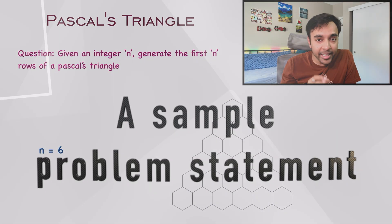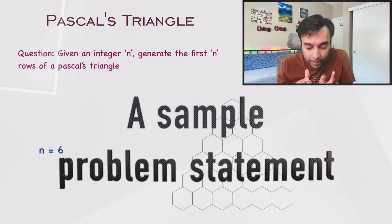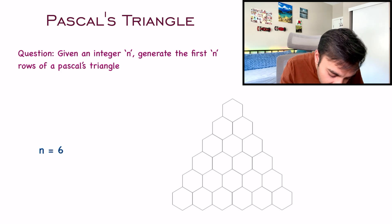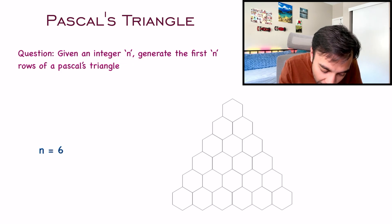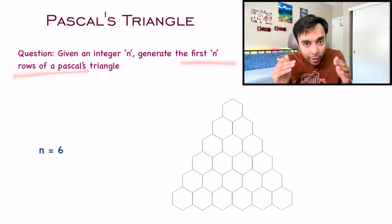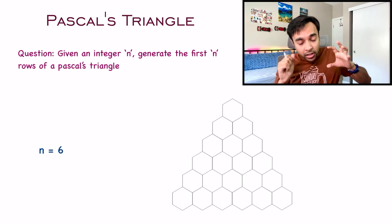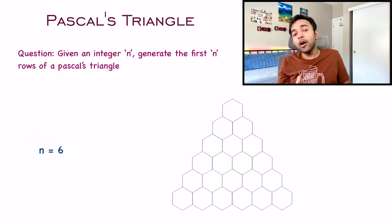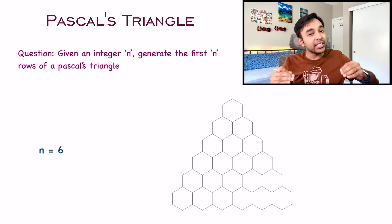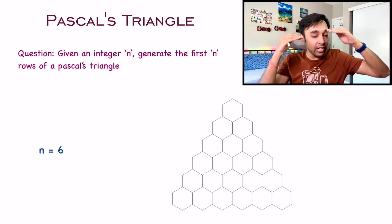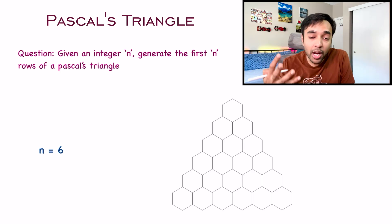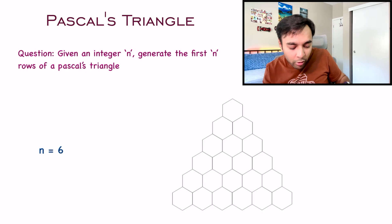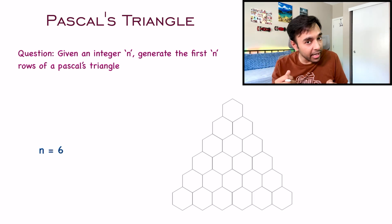First of all, let's try to take a look at a generic problem that you will find on a Pascal's triangle. You are given an integer n and you have to generate the first n rows of a Pascal's triangle. For this particular example, the value of n is 6, which means that this Pascal's triangle will have 6 rows. So how do you go about creating a Pascal's triangle? This is how you first of all lay out all of your 6 rows.